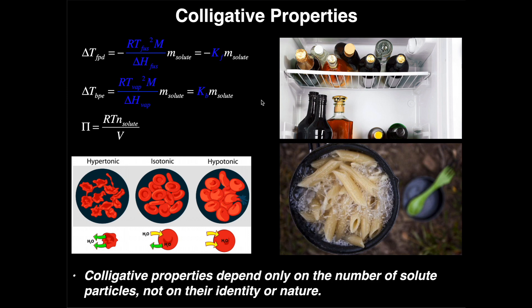This is going to be one of the first videos where we start talking about what are called colligative properties. Colligative properties are defined as certain properties of a solution that are really just dependent on the number of particles that you have in the solution. It doesn't matter what type of particle — it really just depends on the number of them.